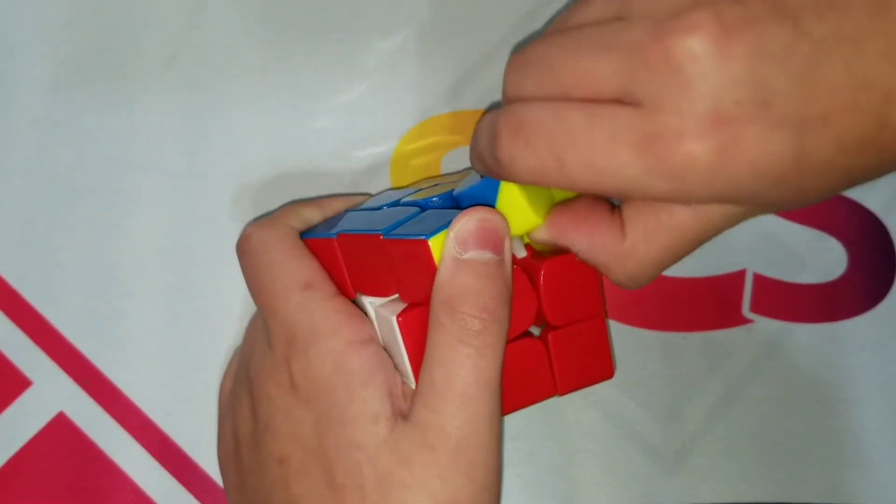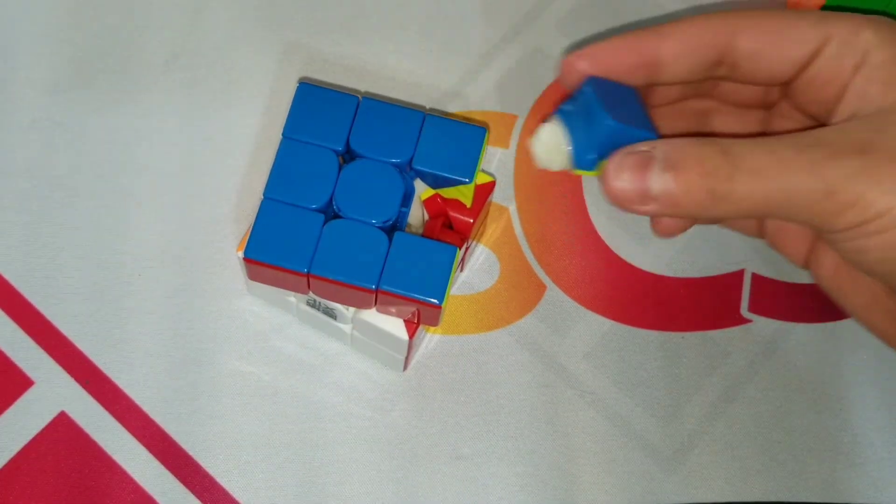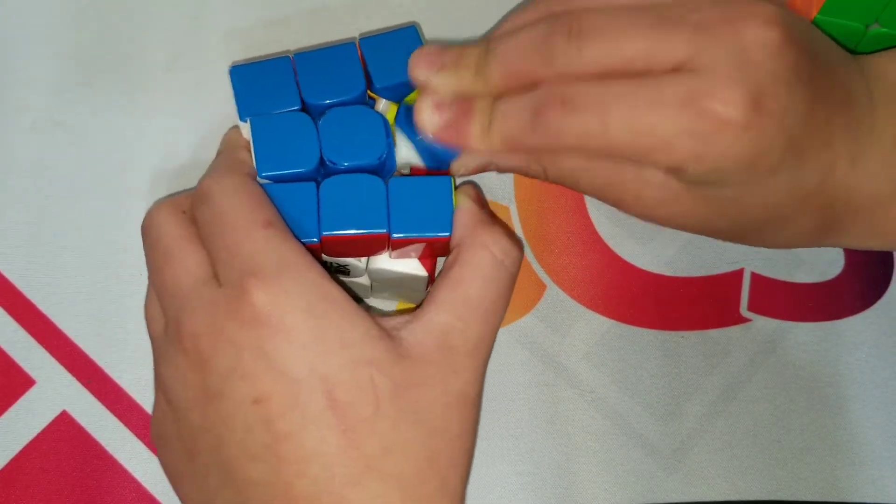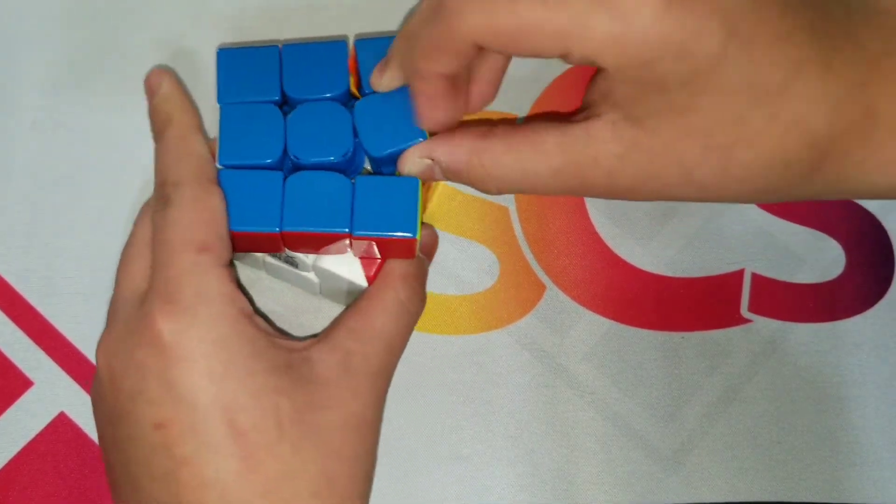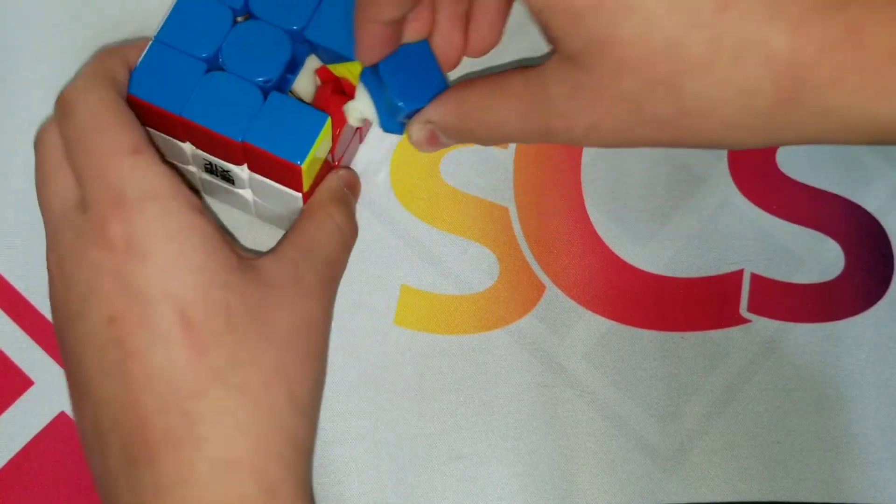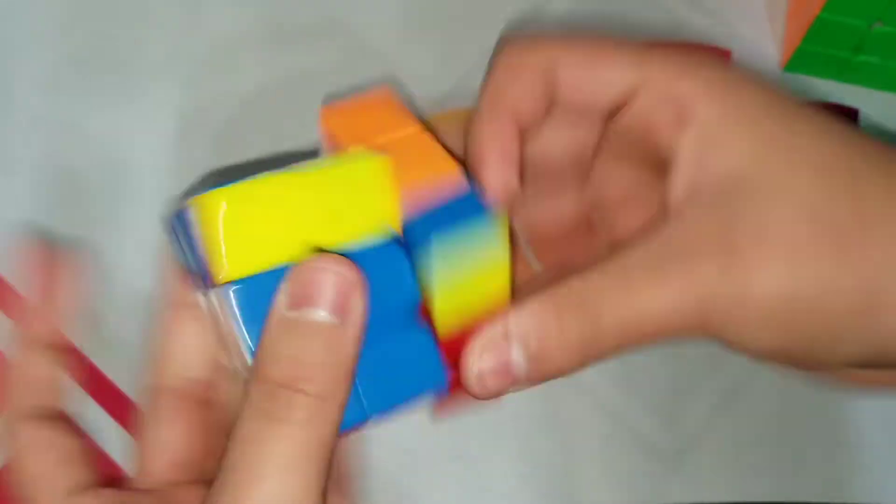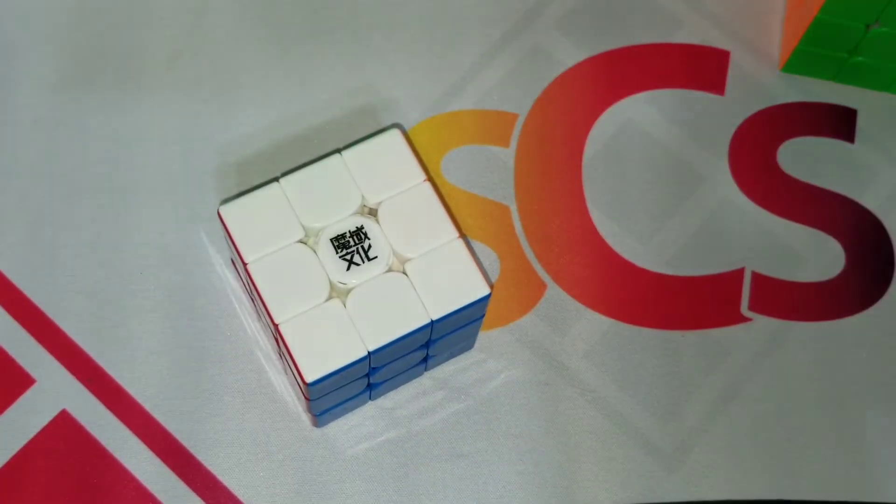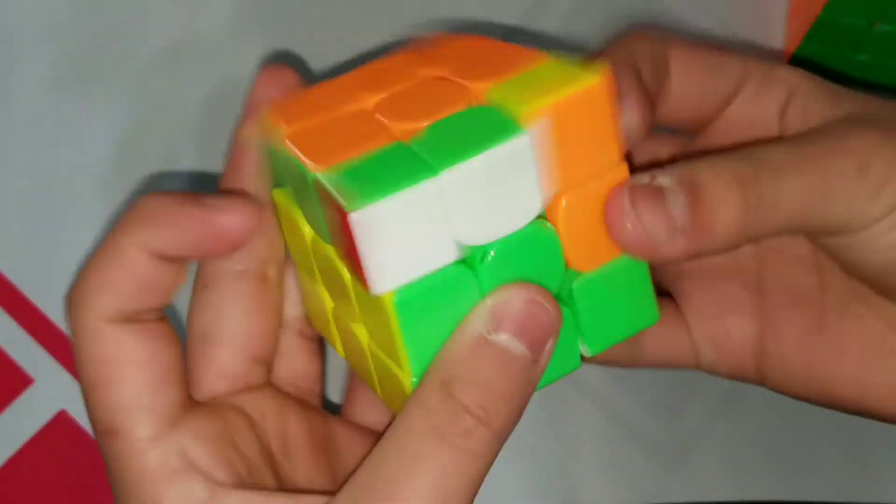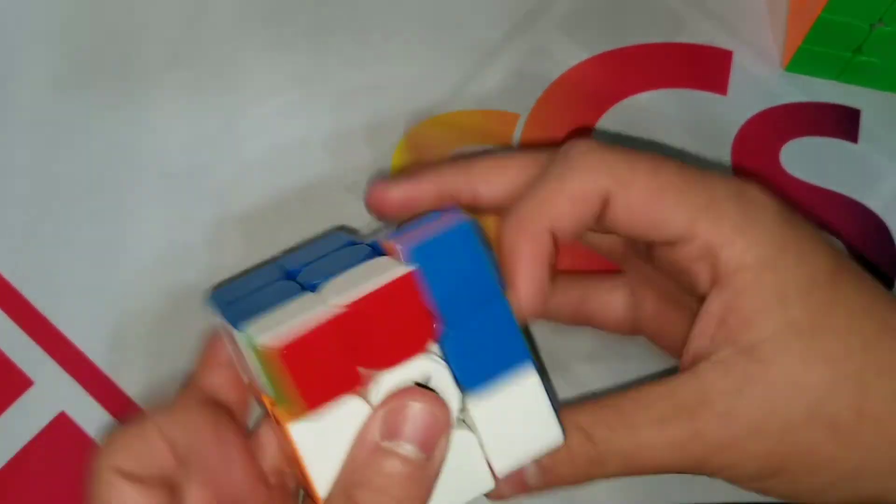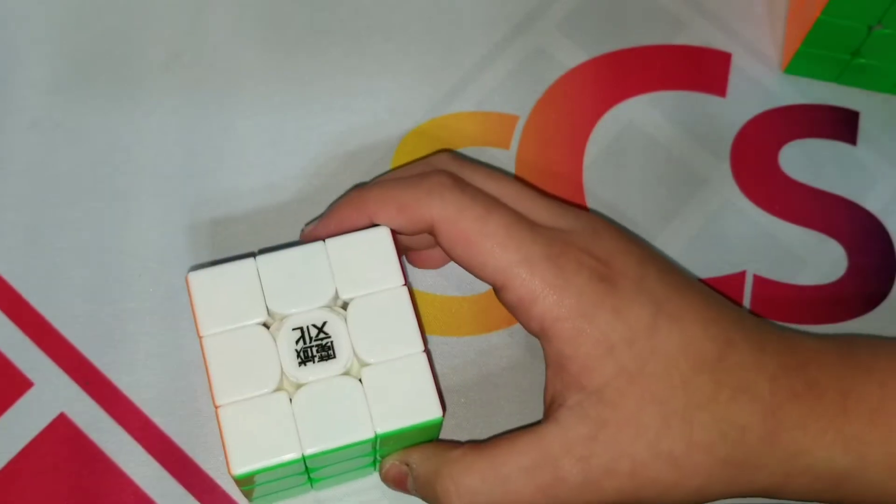But on the WRM, on this one yes I can remove pieces. So the default tensions on the WRM 2020 is a little bit tighter. But either way, even if this cube is loosened a little bit, it wouldn't really make much of a difference since it already has the anti-pop mechanism. That means even if you were to loosen it, it wouldn't pop.